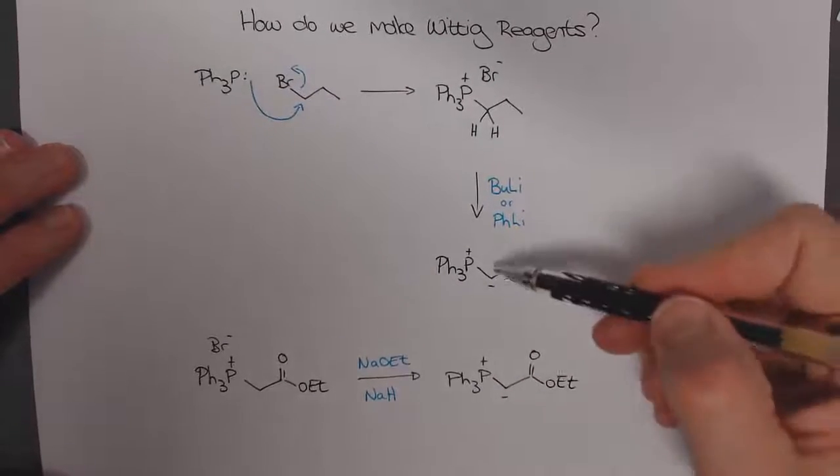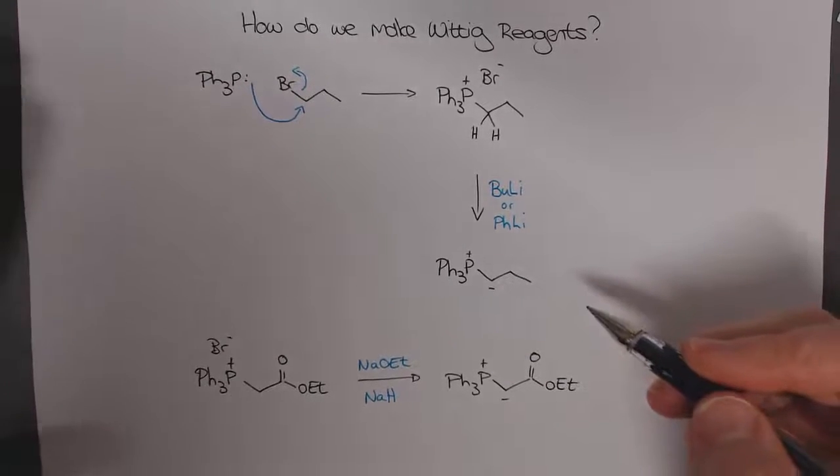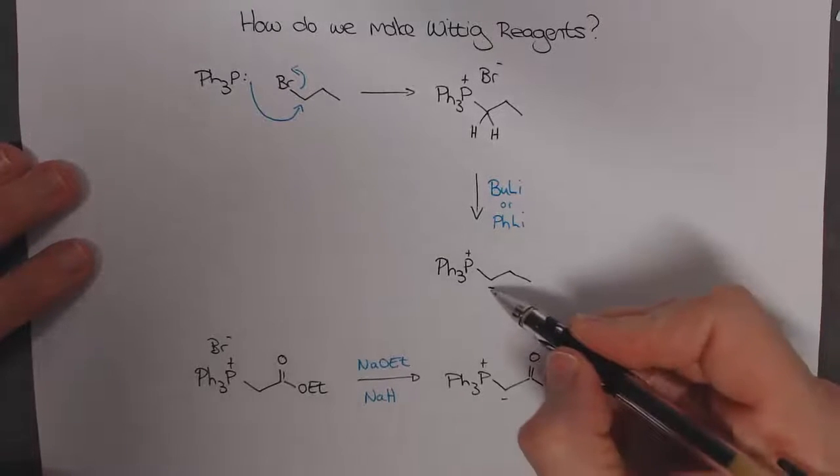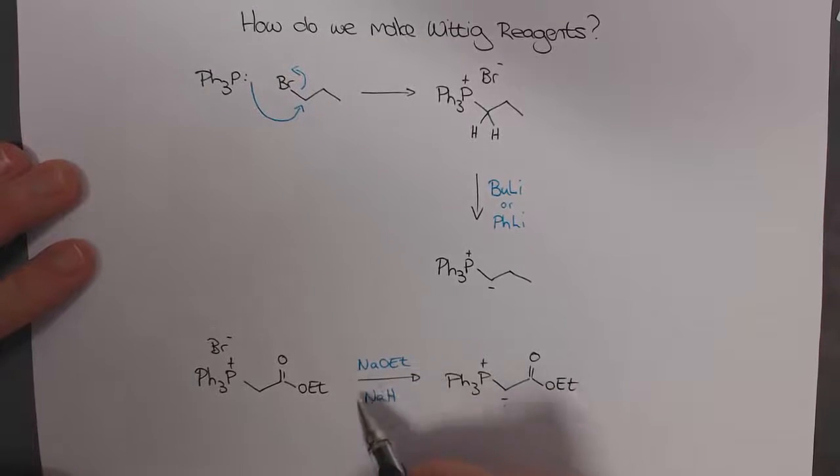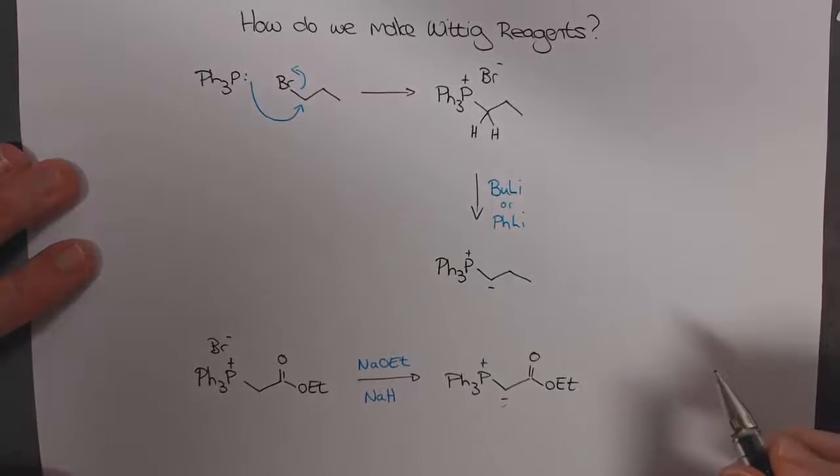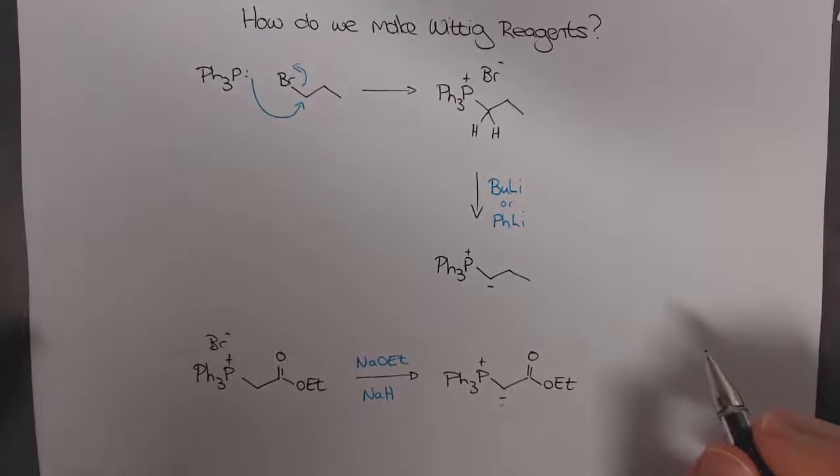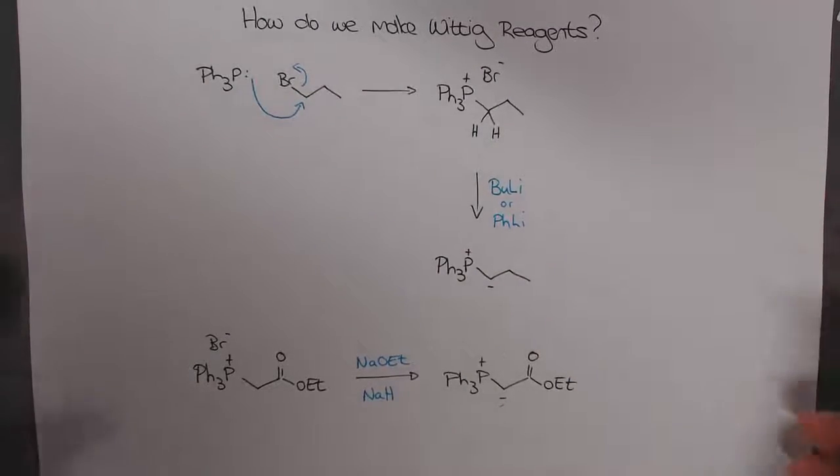If we compare these two ylids, I'm hoping you would appreciate, and this is going to be important, that the negative charge over here is not as stabilized as this one. The whole reason we could use a weaker base to deprotonate this salt is because of the delocalization of this negative charge into the carbonyl. So this negative charge is more stable than this one. That stability is going to be important in terms of the selectivity of our Wittig reaction.